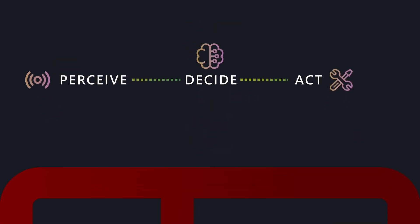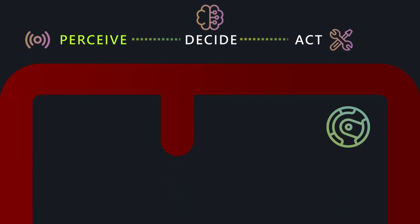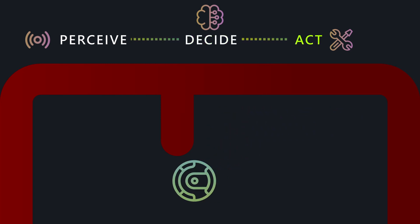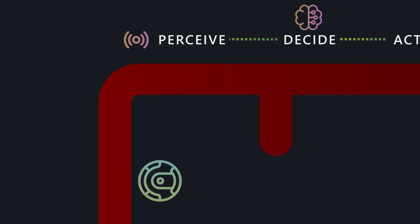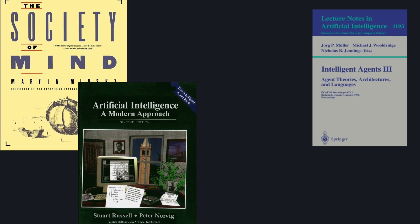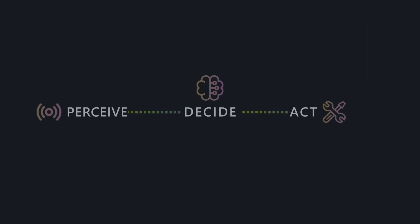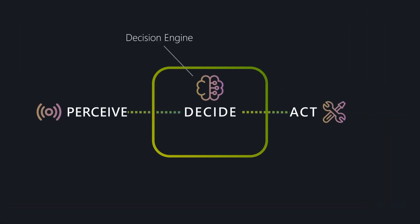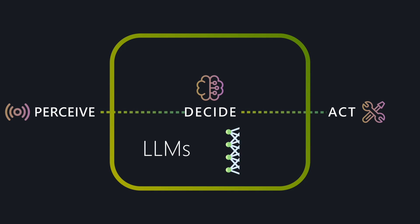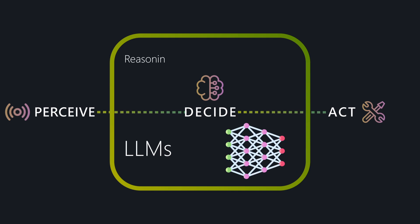This is called the perceive-decide-act loop. Think of a smart robot vacuum: it perceives the world using sensors, it decides how to navigate a room, and it acts by moving and vacuuming. The idea of an agent isn't new — in fact, it was a major research topic in the 90s and early 2000s. But back then, we didn't have reasoning models that were smart enough to handle complex problems. LLMs changed that. They unlocked new levels of reasoning, planning, and context understanding.